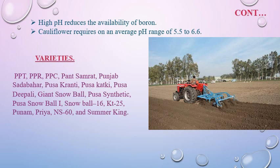Varieties of cauliflower include PPT, PPR, PPC, Panth Samrat, Punjab Siddha Bahar, Pusa Kranti, Pusa Katki, Pusa Dipali, Giant Snowball, Pusa Synthetic, Pusa Snowball 1, Snowball 16, KT25, Purnam, and Priya.